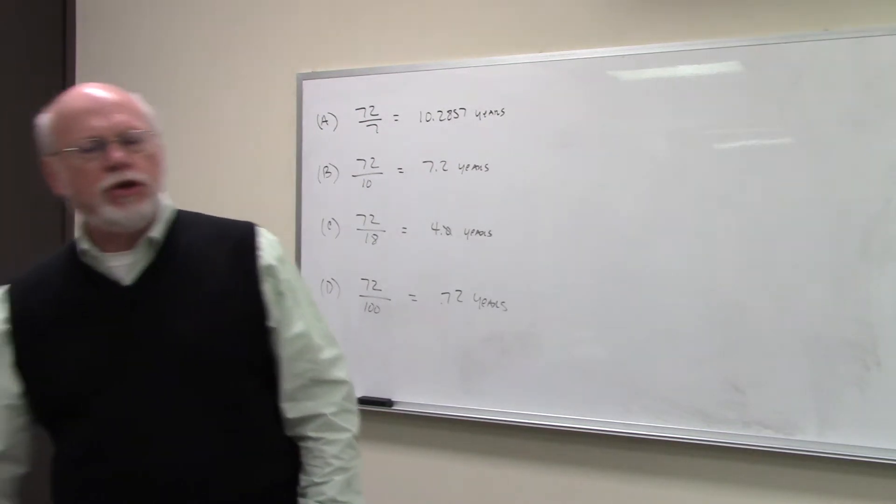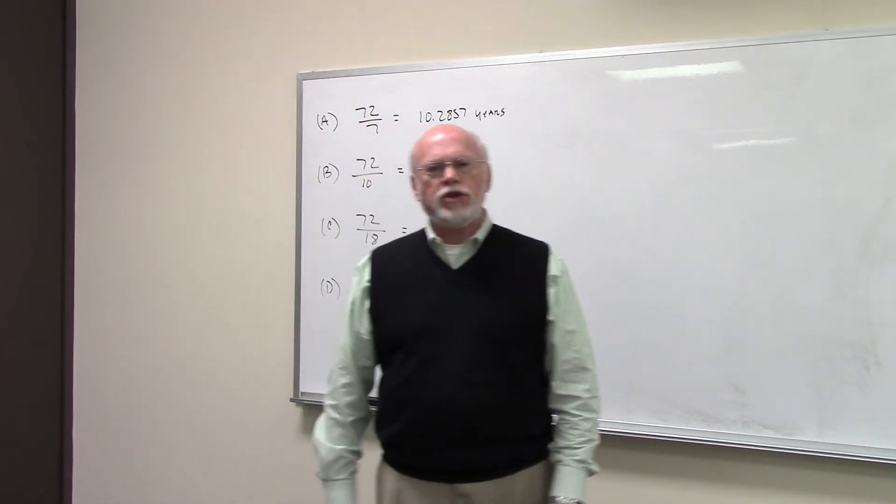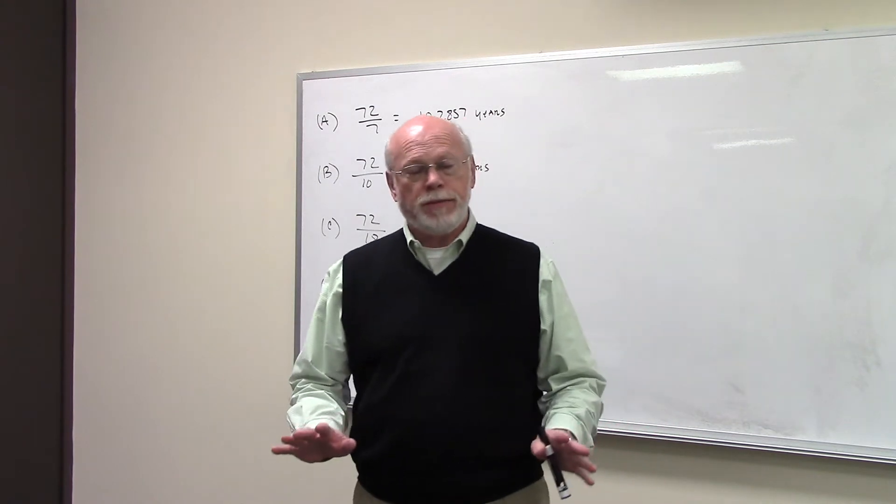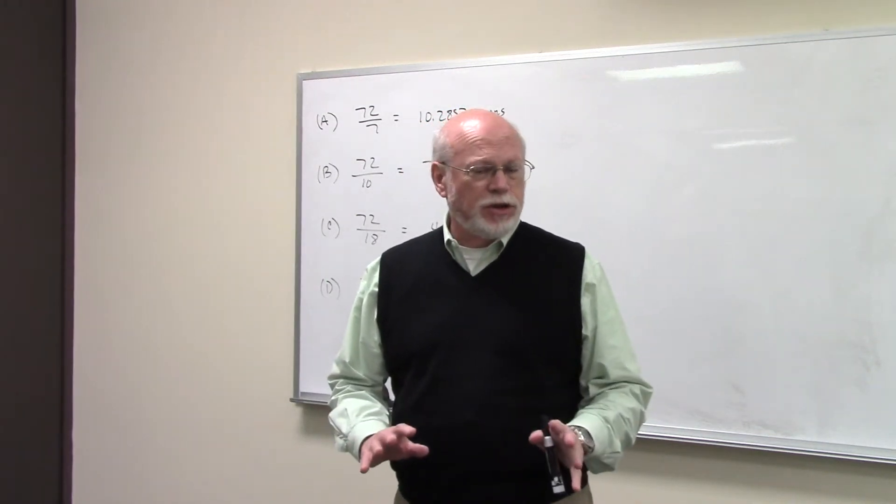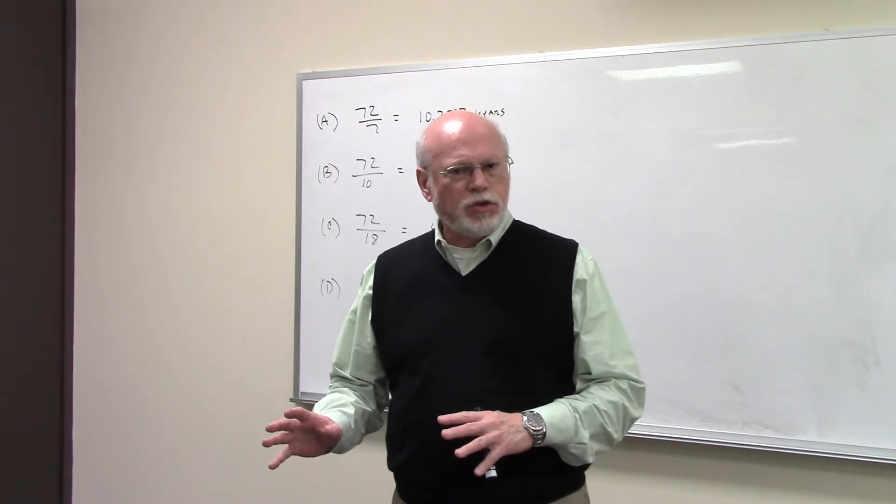What I'm going to introduce to you with this problem is what's called the Rule of 72. The Rule of 72 says that if you take 72 and divide it by the interest rate that you're earning, it tells you how long it takes a lump sum to double.